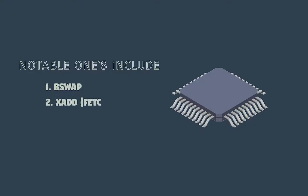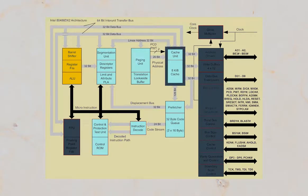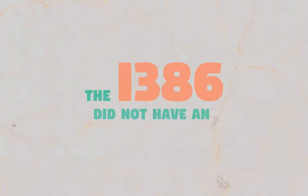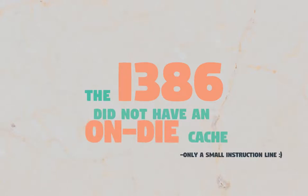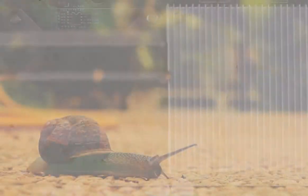The i486 had several new instructions, including notable ones like XADD and BSWAP. It also had an on-chip shared 8KB cache that stored recent data. The i386 and previous processors didn't have an on-die cache — only a small storage line for storing instructions. Instead, they used a separate chip for cache that was embedded on the motherboard.